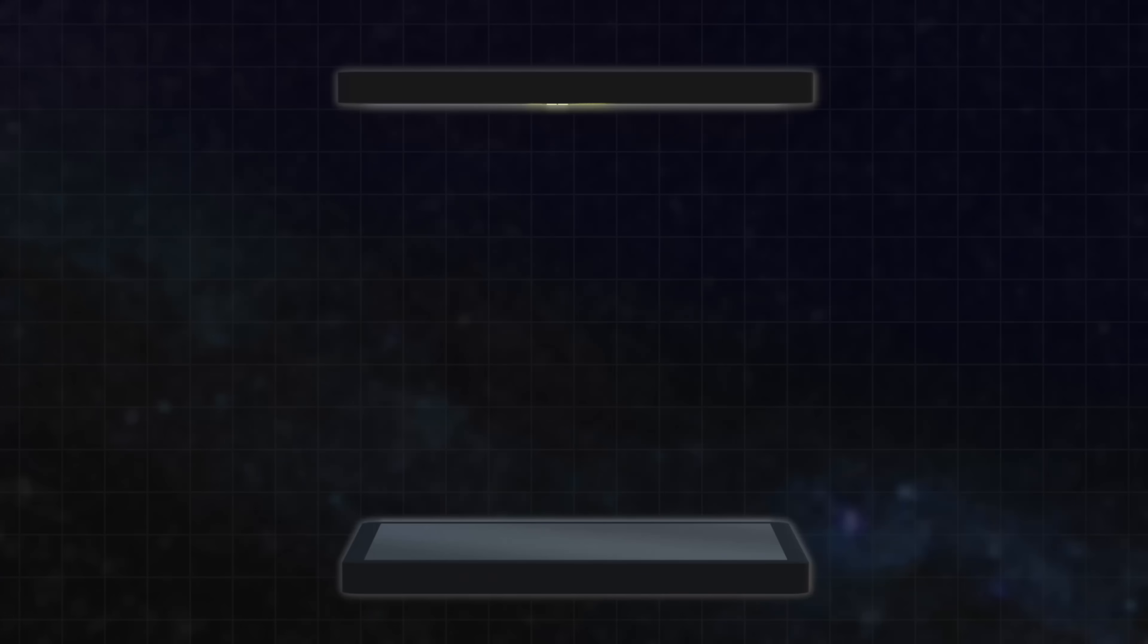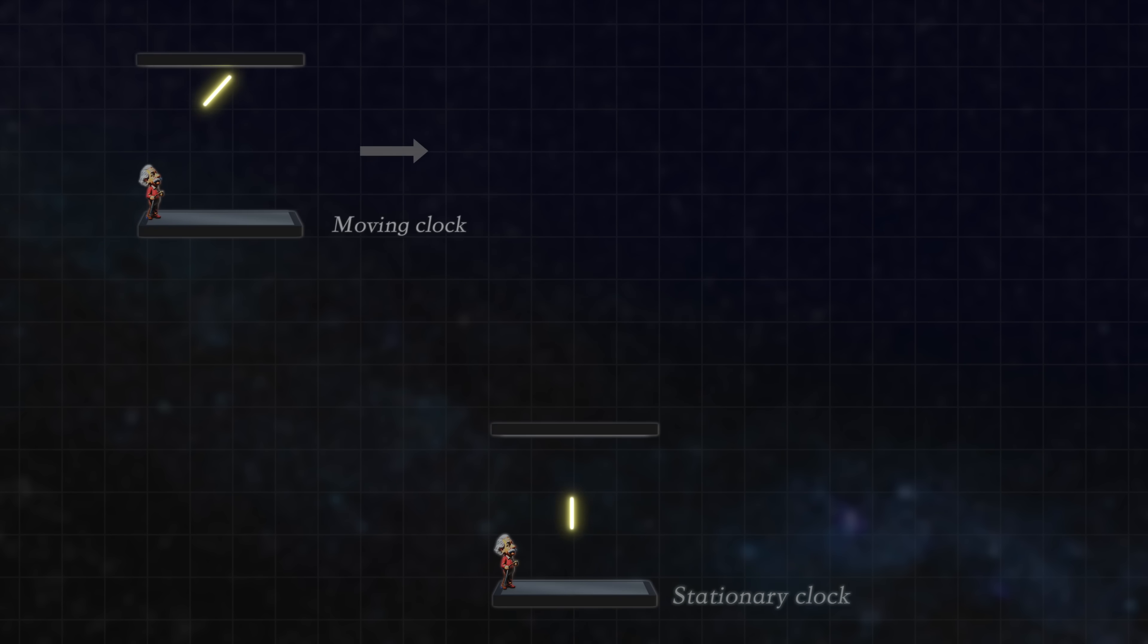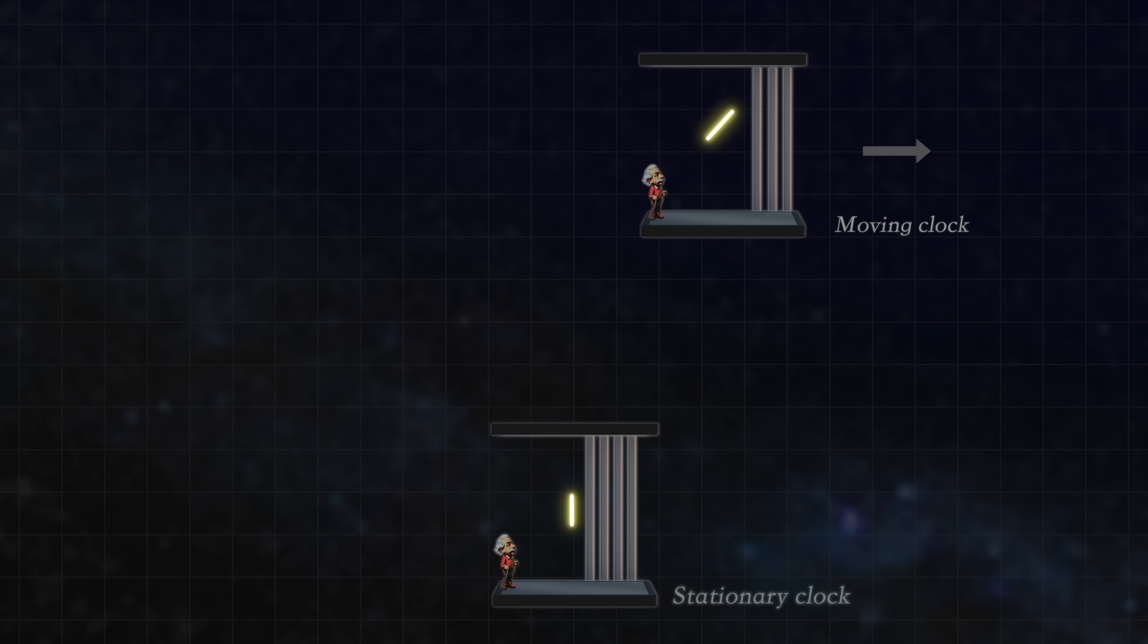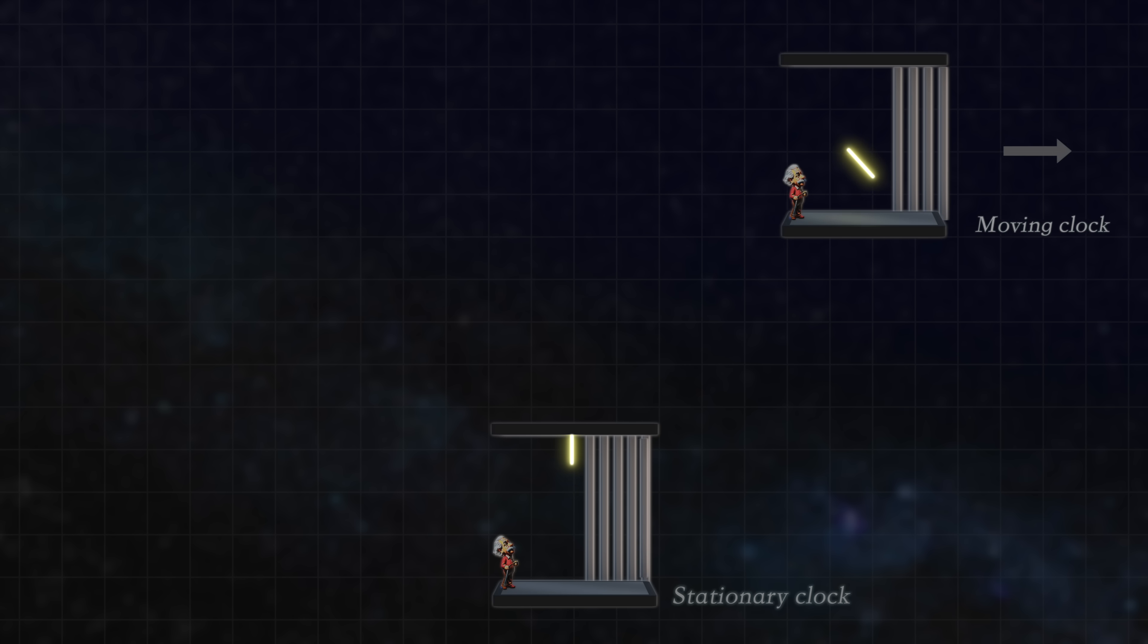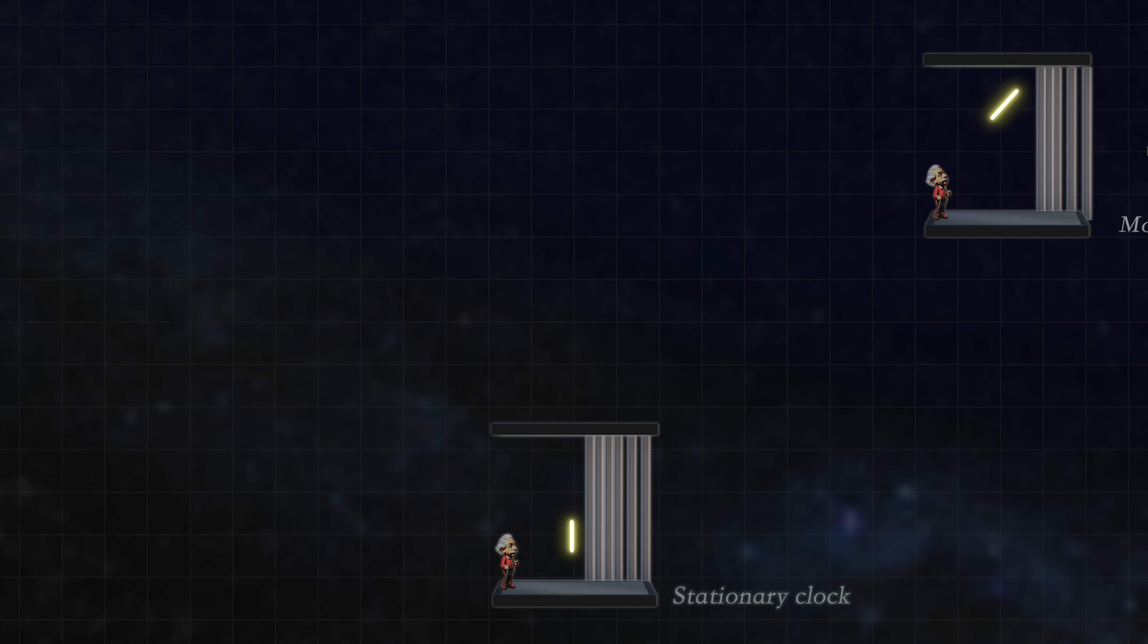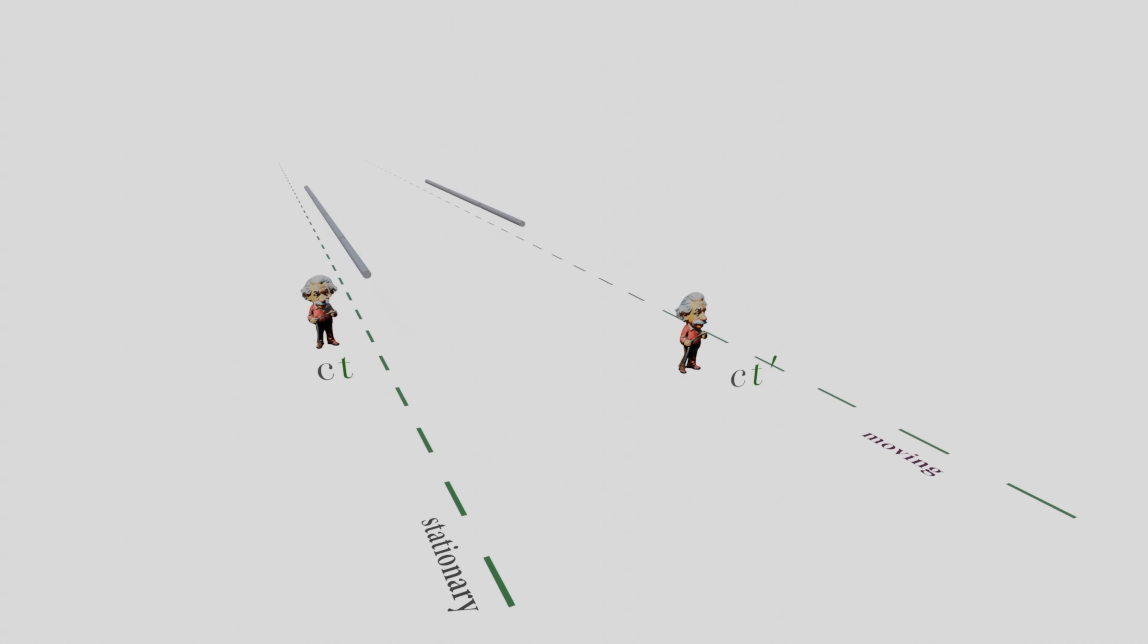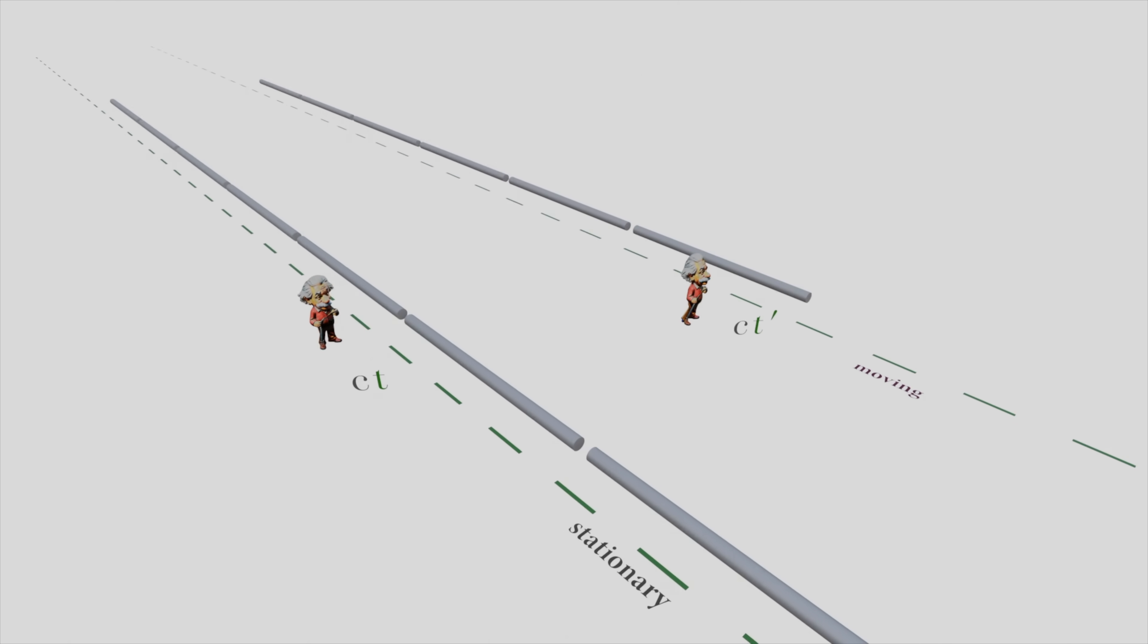Thus, an observer traveling with that light clock will therefore have to wait longer to lay down their next rod as compared to an observer at rest, i.e., they are sacrificing the physical progression of the ticking of their light clock for motion through space. The magnitude of their fourth dimension thus grows at a different rate than that of an observer at rest.